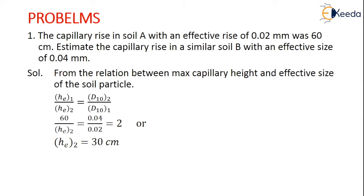Let us go to the problem. The capillary rise in soil A with an effective size of 0.02 mm was 60 centimeters. We have to estimate the capillary rise in a similar soil B with an effective size of 0.04 mm. We know the relation: hc is inversely proportional to 1/D10. So (hc)₁/(hc)₂ = (D10)₂/(D10)₁.